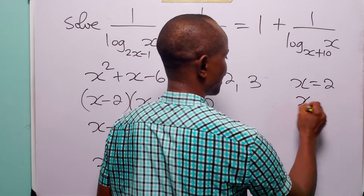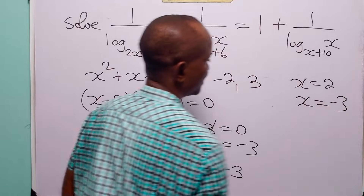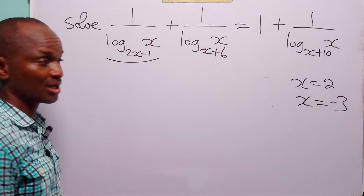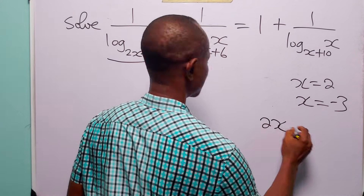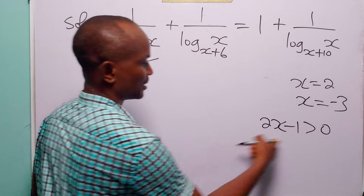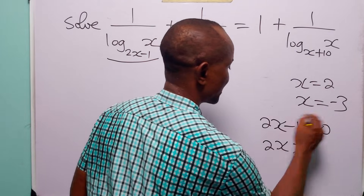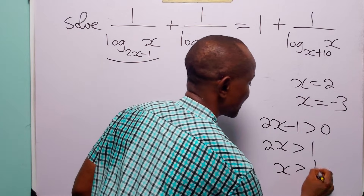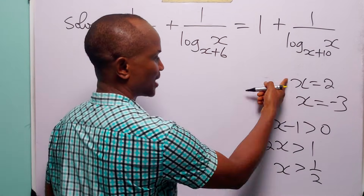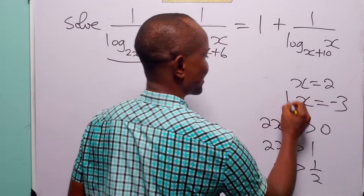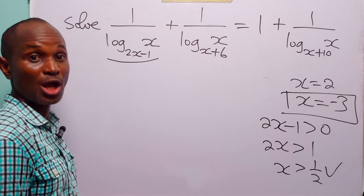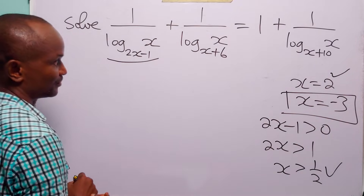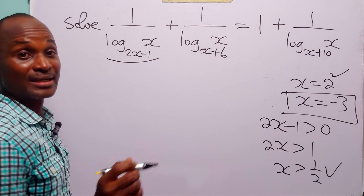For the logarithm to be defined, the base must be positive. From the original equation, 2x minus 1 must be greater than 0, which means x must be greater than 1/2. Looking at our two values, x equals minus 3 does not satisfy this condition, so the only valid solution is x equals 2.